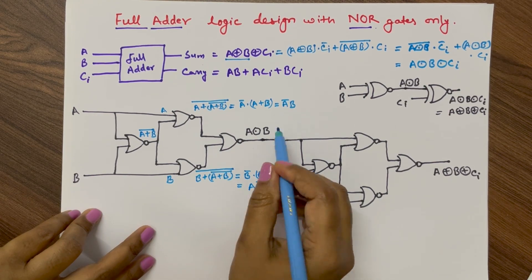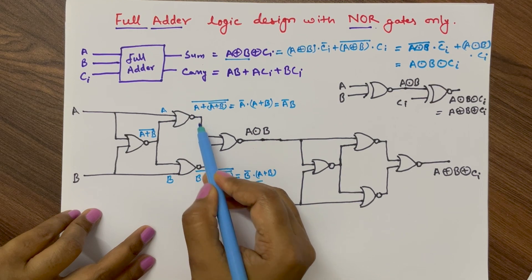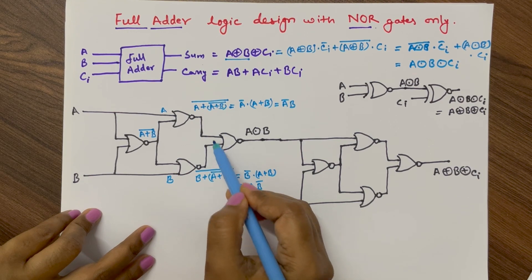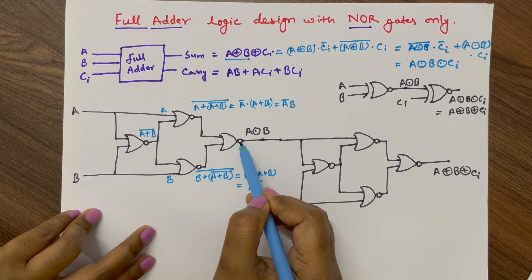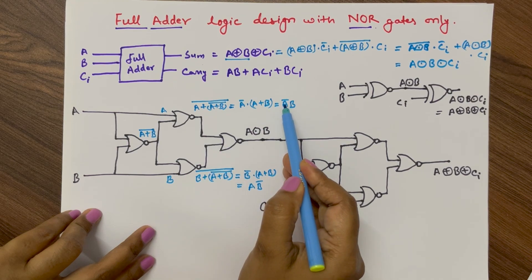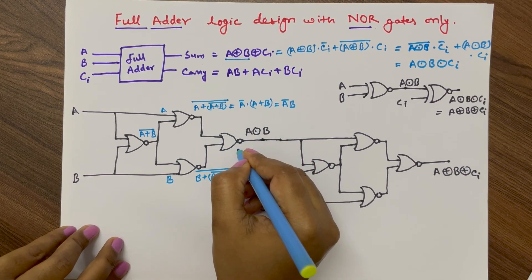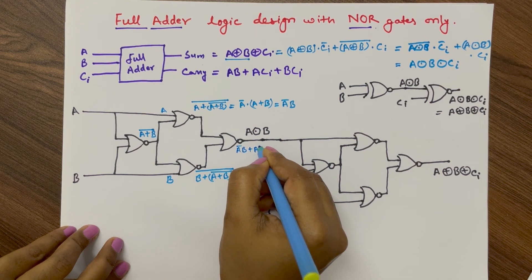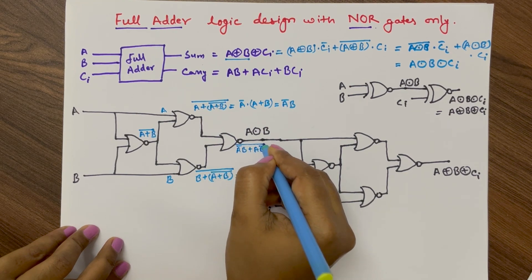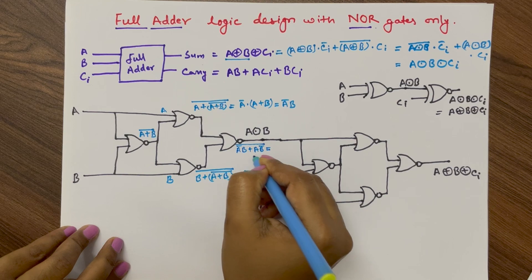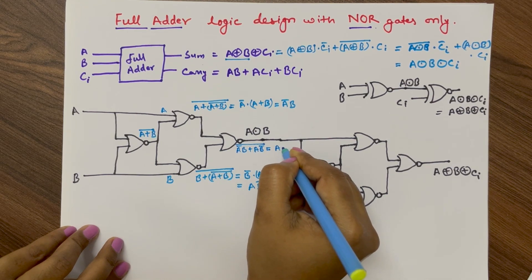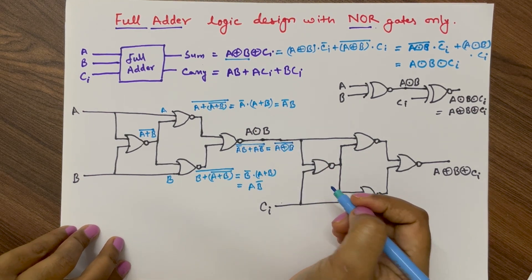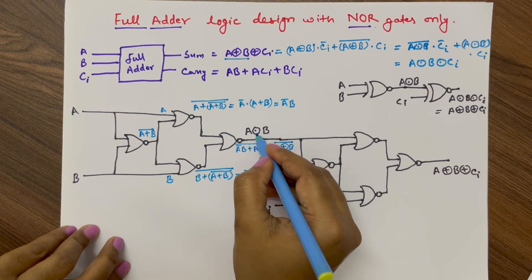So we have A_bar·B from the second NOR gate and A·B_bar from the third NOR gate. The output of these two NOR gates is input to the fourth NOR gate, so output will be the complement of (A_bar·B + A·B_bar), which is (A XOR B)_bar — that is, A XNOR B.